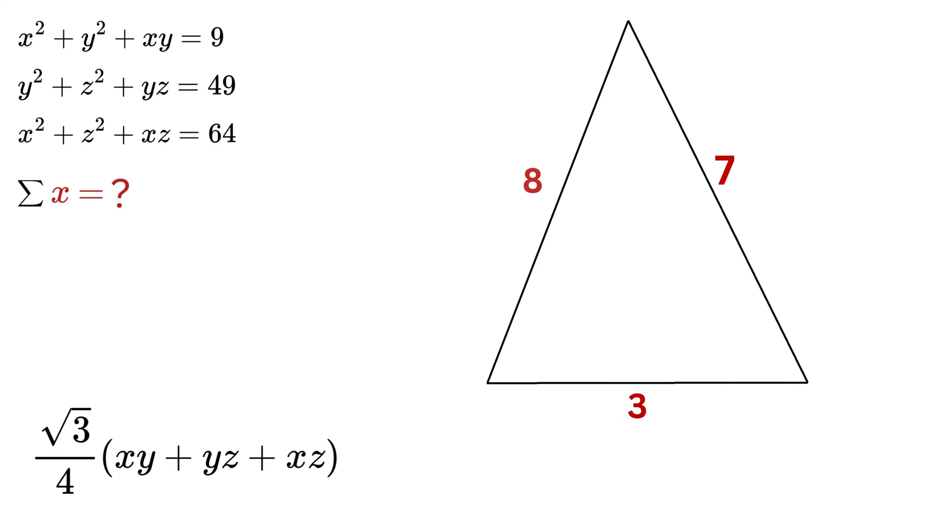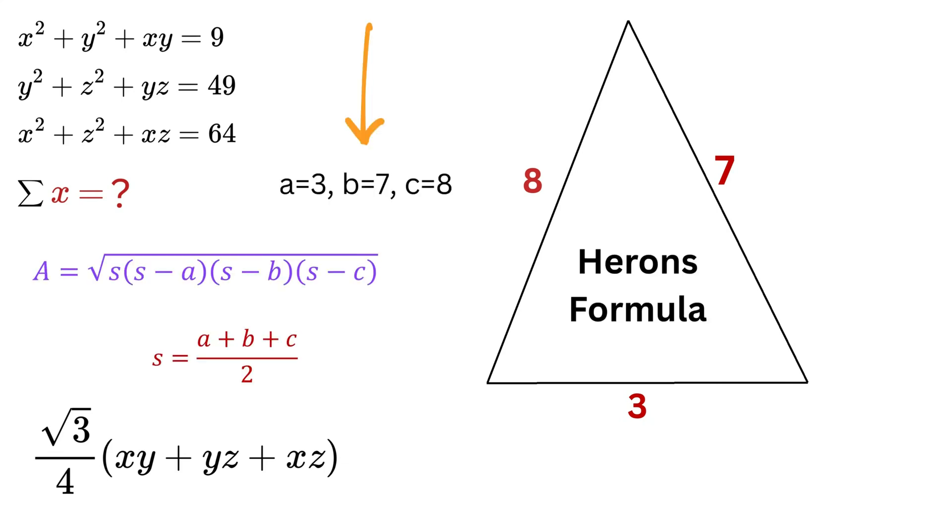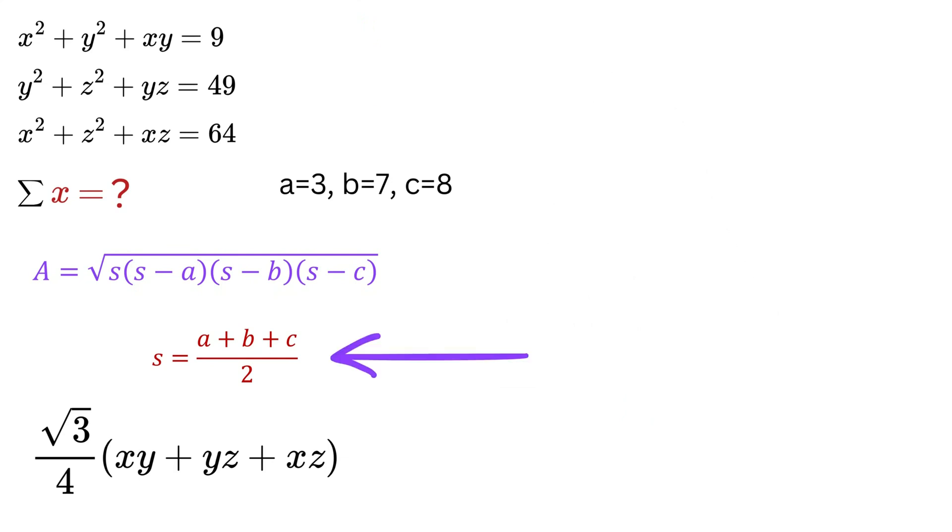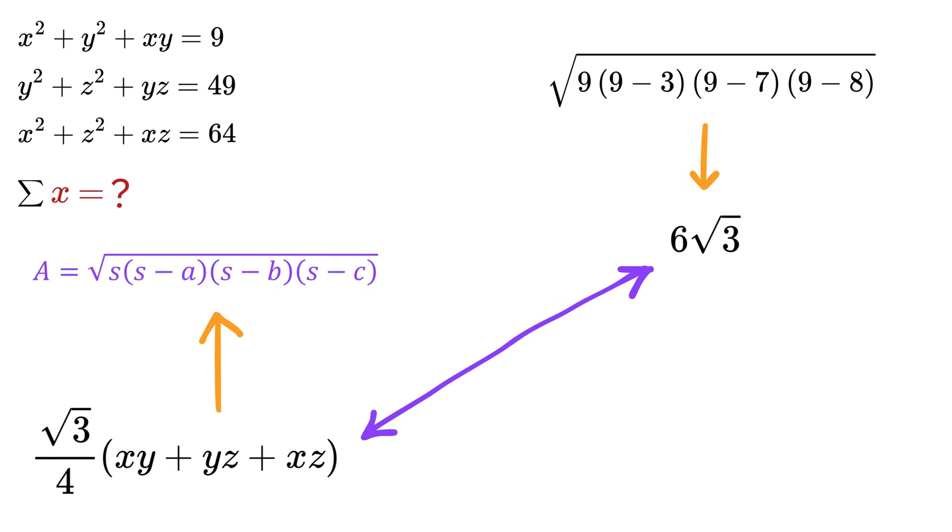The three sides of the triangle are 3, 7, and 8. First we calculate the semi-perimeter, which is (3 + 7 + 8)/2, that is 9. Now using Heron's formula, the area equals √[9(9-3)(9-7)(9-8)]. This simplifies to 6√3. So total area is 6√3.